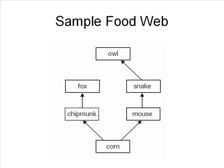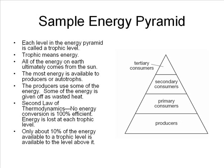In the real world, things are more complicated than simple food chains. We usually illustrate these relationships with what are called food webs. Food webs are several interconnected food chains. In the food web shown on the screen, corn is eaten by both mice and chipmunks. Corn is the producer; mice and chipmunks are the primary consumers. The mice are eaten by snakes, the chipmunks are eaten by foxes. The snakes and foxes are secondary consumers, whereas the owl eats the snake, making the owl the tertiary consumer.